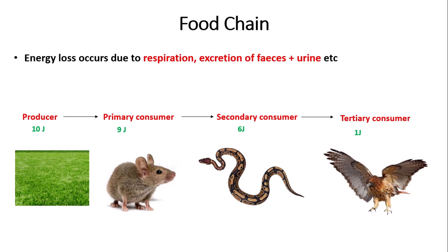What we can do with these energy losses is calculate the efficiency of energy transfer. If we take the energy loss between the primary consumer and the secondary consumer — the primary consumer has 9 joules and the secondary consumer has 6 joules — we can find the efficiency. This is basically a percentage: we divide 6 by 9 and then multiply by 100. The percentage efficiency of energy transfer between the primary consumer and the secondary consumer is 66.6%, rounded to three significant figures.